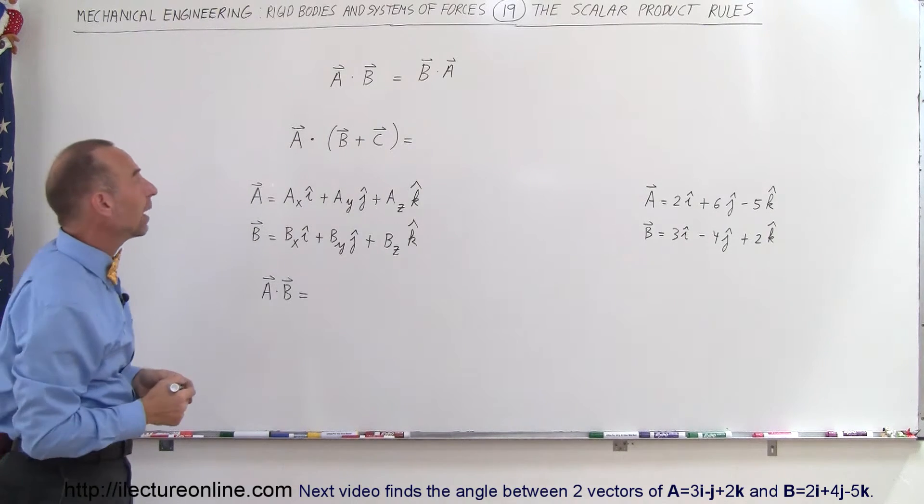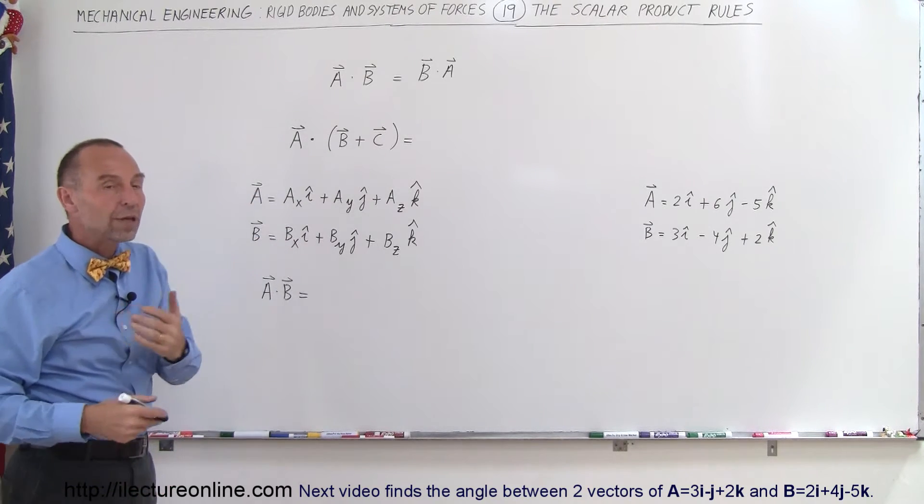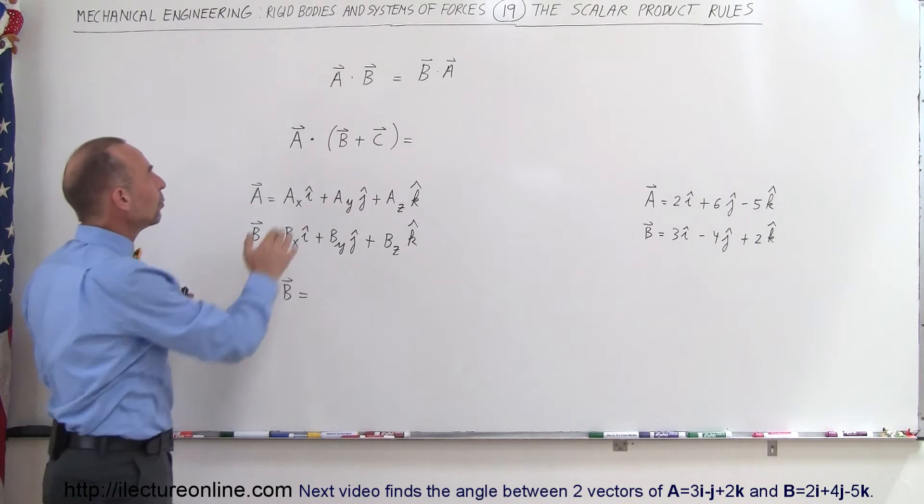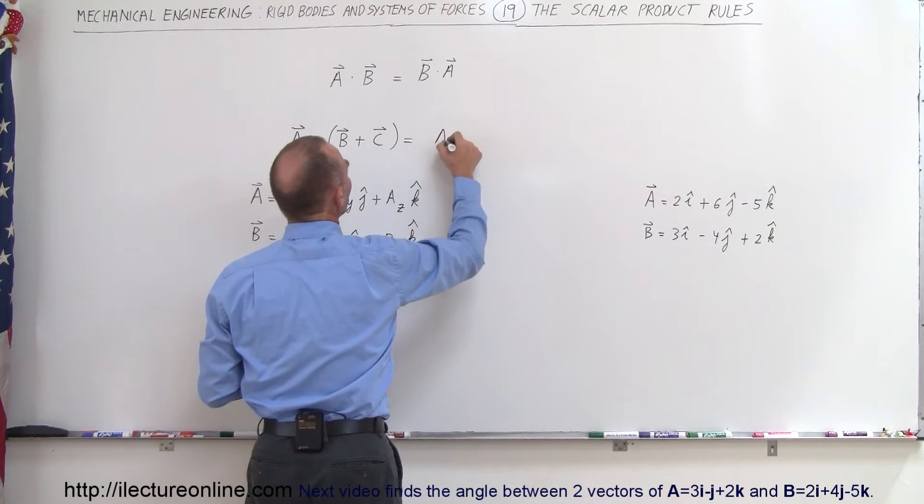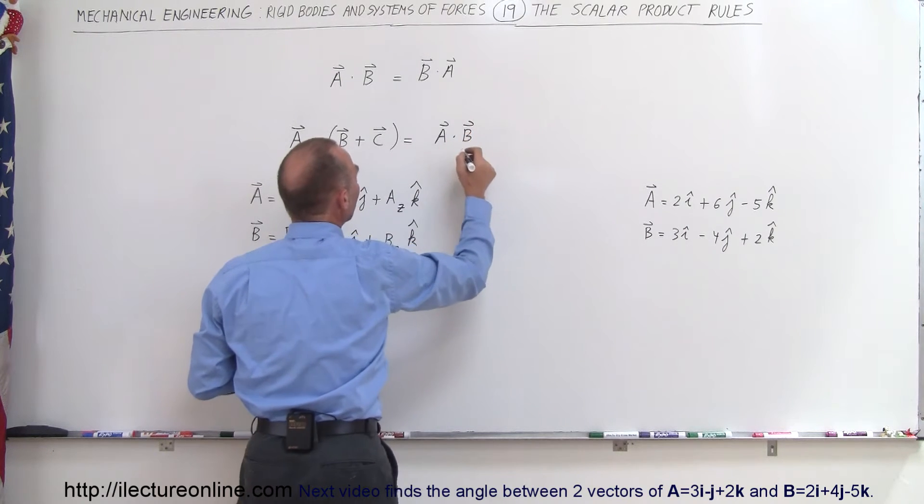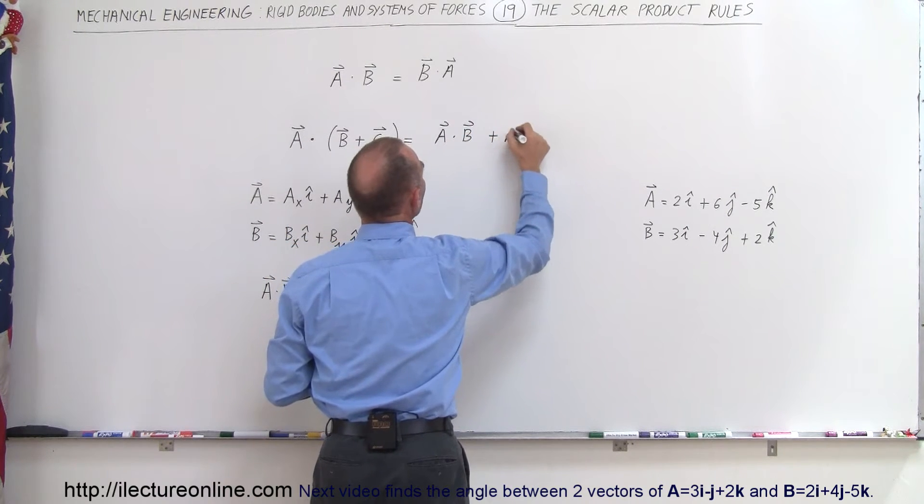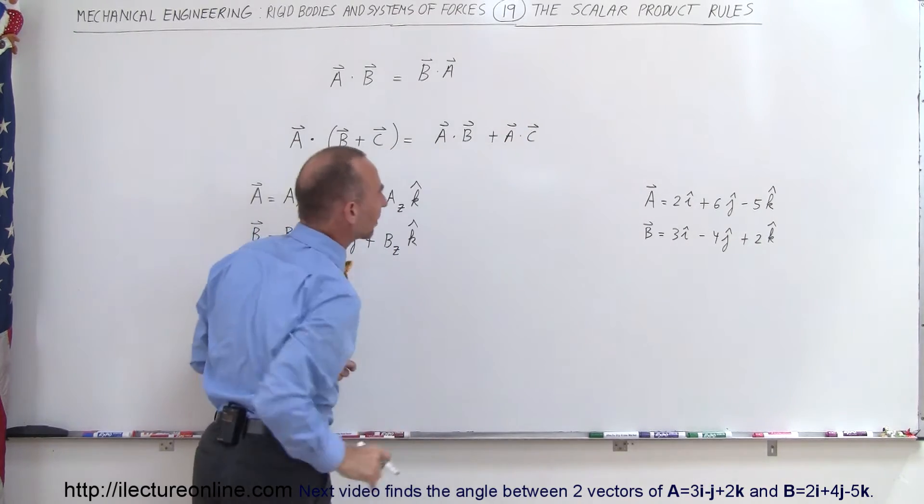A dot B is the same as B dot A. If we have A dot (B plus C), so we do a scalar product between one vector and the sum of two other vectors, this can be written as vector A multiplied times vector B via the scalar product, plus vector A multiplied times vector C via the scalar product. So this is exactly the same.